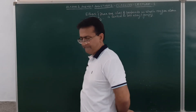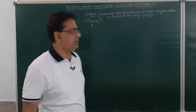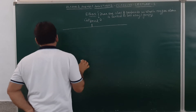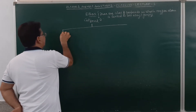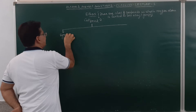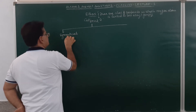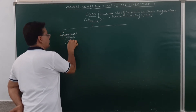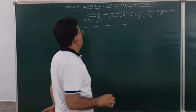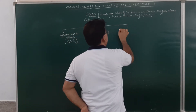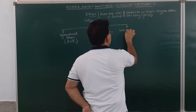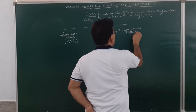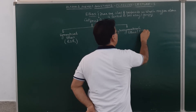Ethers can be classified into two categories: they will either be symmetrical ethers or unsymmetrical ethers. Symmetrical ethers are represented as R-O-R, and unsymmetrical ethers are written as R-O-R'.